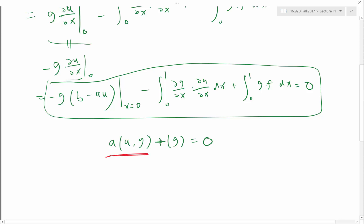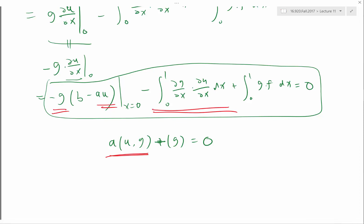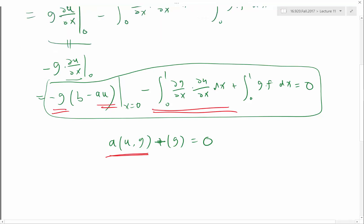So my a now becomes this part plus this times this part. I actually get one more term in my a and I also get one more term in my l. Sorry, l of g. So a boundary condition can actually change both the bilinear form and linear functional.